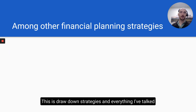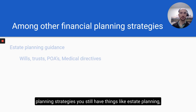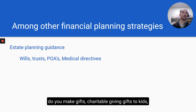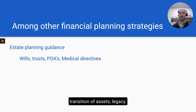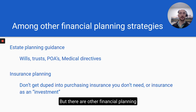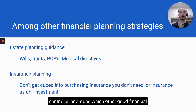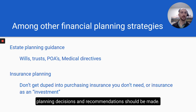Everything discussed today is among other financial planning strategies. You still have things like estate planning guidance — wills, trusts, powers of attorney, medical directives — as well as gifting decisions, charitable giving, gifts to kids, transition of assets, and legacy planning. You also have insurance planning and other financial planning considerations. What we've talked about today is the central pillar around which other good financial planning decisions and recommendations should be made.